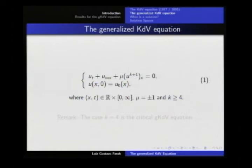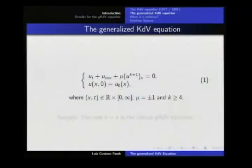Today we are going to talk about the generalized KdV, which is the same equation but we replace the power on the nonlinearity by some power greater than or equal to 5, OK, for K plus 1. From the physical point of view, as far as I know, we only have physical applications for the case K equal 1 and K equal 2. K equal 1 is the KdV equation; K equal 2, with power 3, is what we call the modified KdV equation. After that, I don't know any physical applications, but from the mathematical point of view it's very relevant to study these other powers.